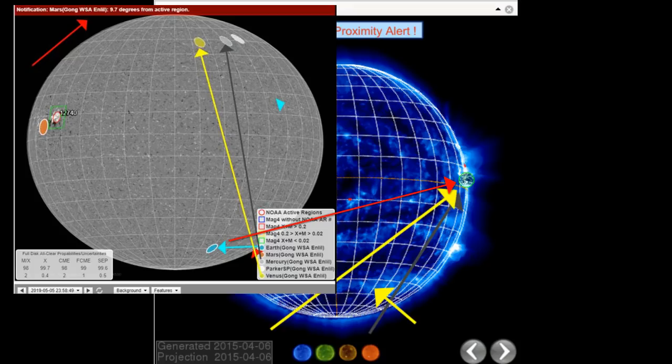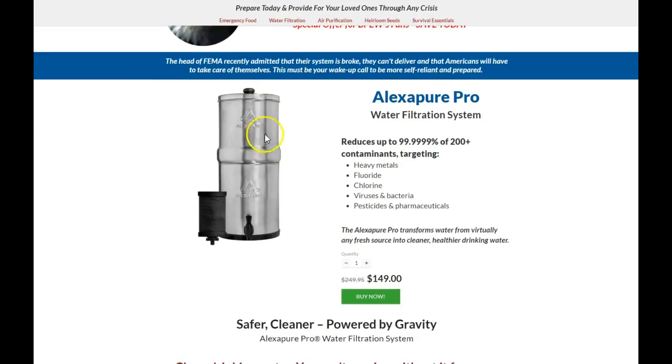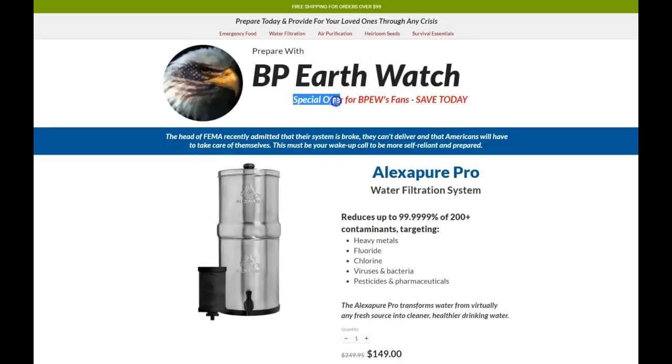I'm watching it, you watch it. Watch for full updates. Heads up, be safe guys. Very quickly, I'm going to put a link to this website that My Patriot Supply built for us. Right now this $249 Alexa Pure water filter with this filter will give you 5,000 gallons of the purest water you can drink on this planet. Reduces at 99.9% of 200 plus contaminants including heavy metals, fluoride, chlorine, viruses and bacteria, pesticides and pharmaceuticals. $100 off, that's $249 system. Special offer for you guys. They'll also have emergency food, air purification, heirloom seeds, and survival essentials. Heads up, be safe.